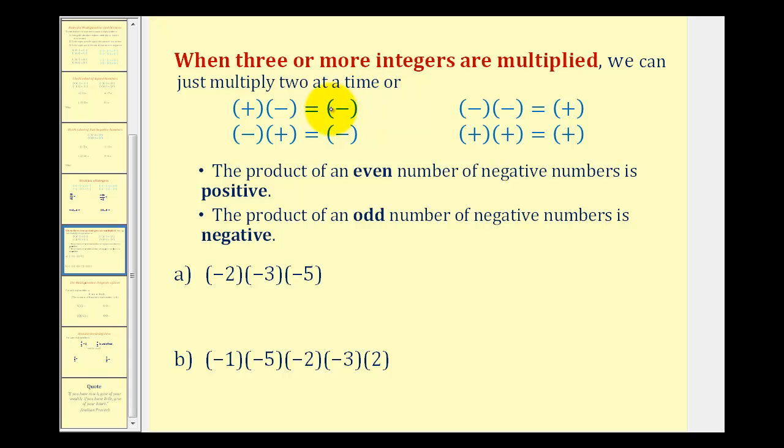Meaning when multiplying two integers with different signs, the product is always going to be negative, and when multiplying two integers with the same sign, the product will always be positive.